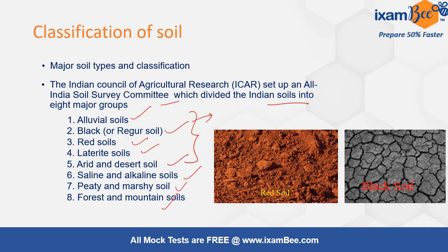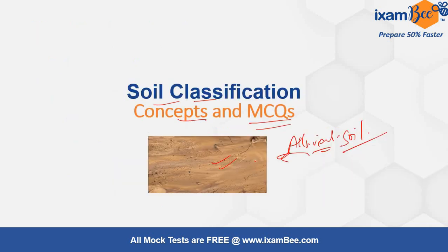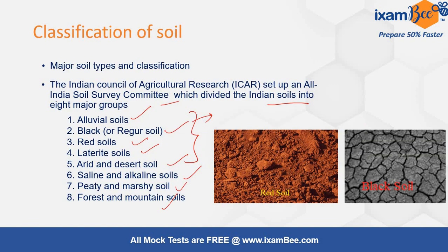Alluvial soil is mainly formed from sediments deposited along river basins. The black soil's dark color is due to the presence of titaniferous magnetite. The red soil has a red color due to the presence of iron oxide.